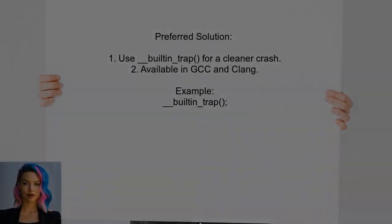The user also discovered __builtin_trap, which is a more elegant solution. This function translates to a trap instruction or calls abort, depending on the compiler. It's available in GCC and Clang, making it a preferred choice for crashing the program without extra output.